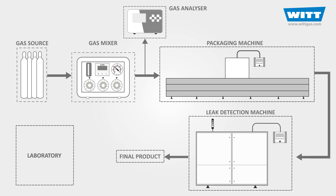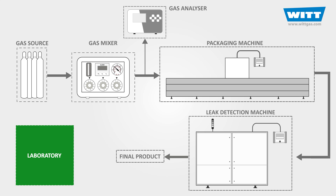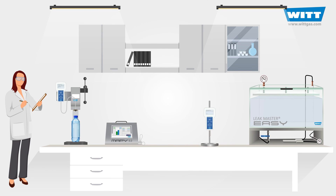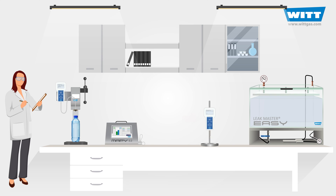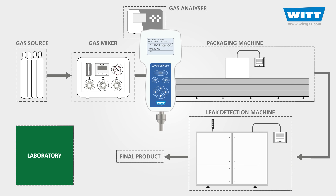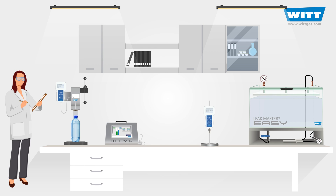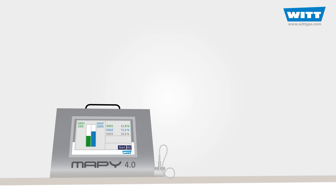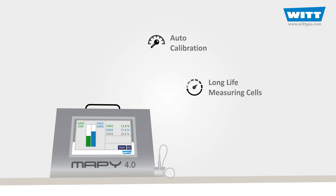In addition to the mentioned equipment in the production line, laboratory testing devices are used as well. Quality control experts perform tests on randomly chosen packages to check the quality and suitability for sale. Along with some other accessories like can piercers, tabletop or portable gas analyzers can be used for analyzing the gas concentration inside different kinds of packages. Portable analyzers are highly versatile and very easy to use — they can be used for analyzing packaging gases in a laboratory or directly on the production line. Tabletop analyzers can have additional options like auto calibration, long-life measuring cells, and more communication ports.